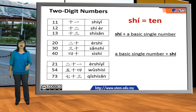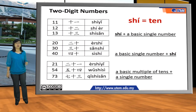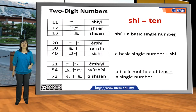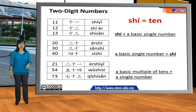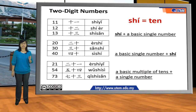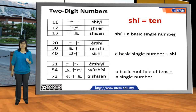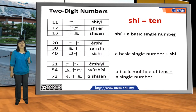For other numbers, we use a multiple of ten plus a single number. For example, 21 is 二十一, 54 is 五十四, and 73 is 七十三.